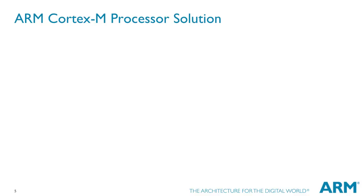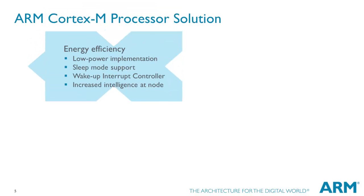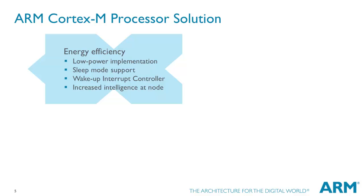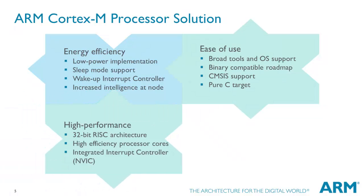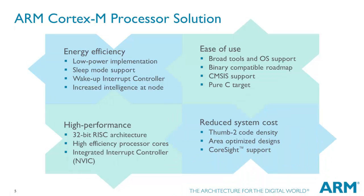The ARM Cortex-M processor family is an upwards compatible range of energy efficient and ease-of-use processors designed to help developers meet the needs of tomorrow's embedded applications through high performance. Those demands include delivering more features at reduced system cost, increased connectivity, better code reuse and improved energy efficiency.